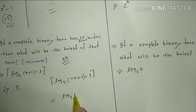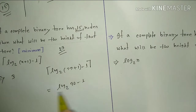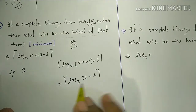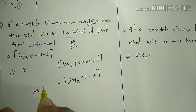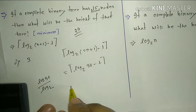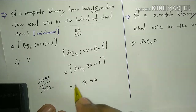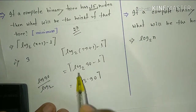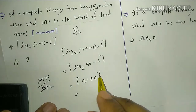Ceiling of log base 2 of 30, minus 1. Log base 2 of 30 is approximately 3.90, so the ceiling is 4. Therefore the height is 4.